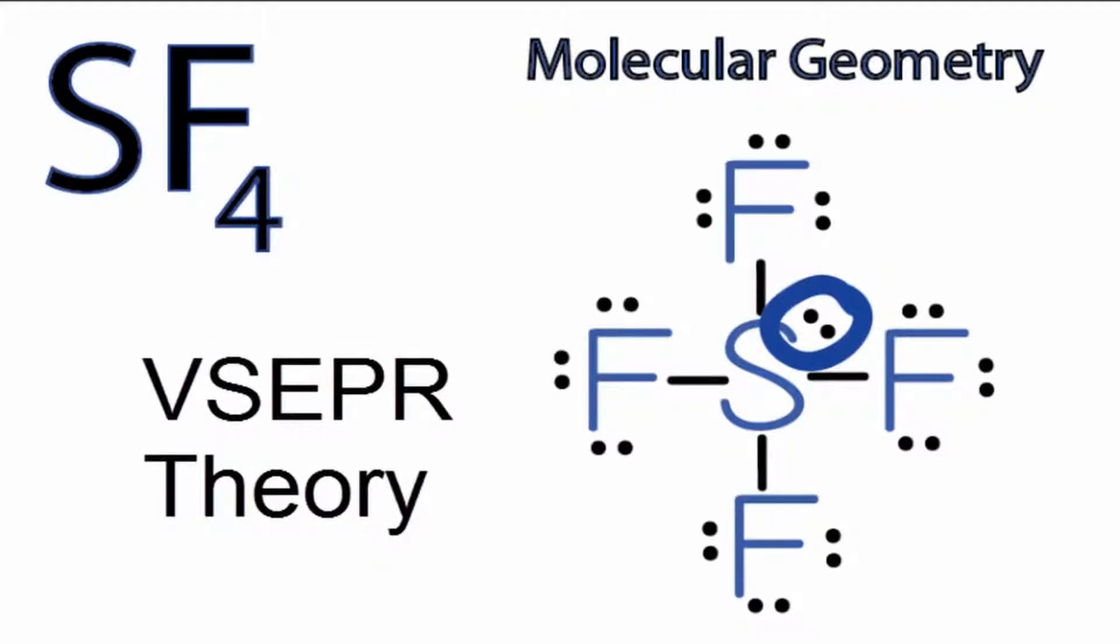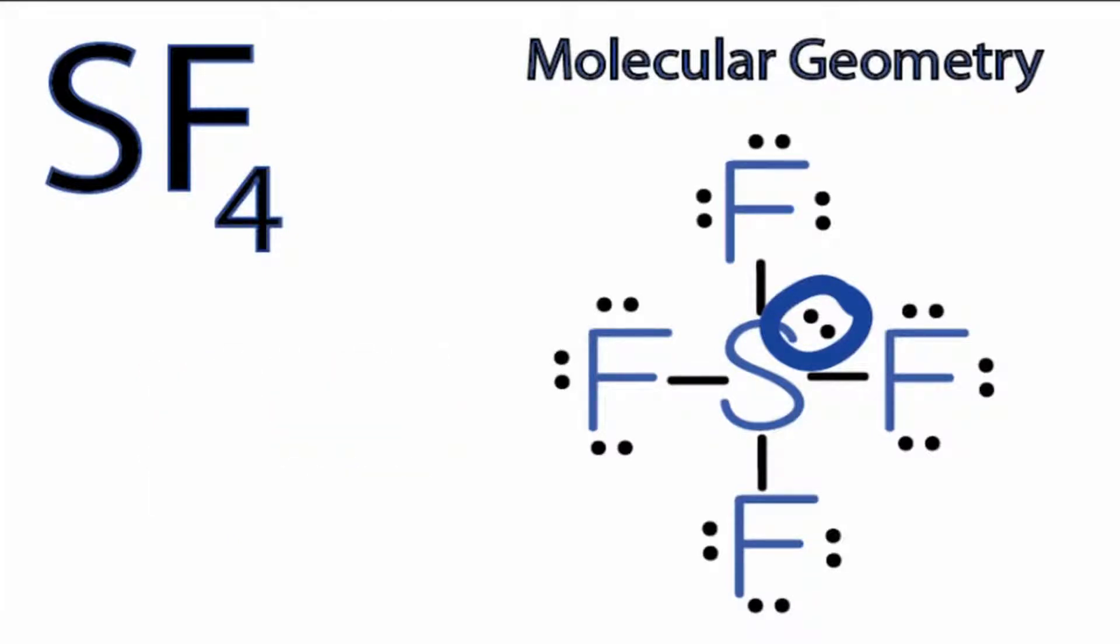According to valence shell electron pair repulsion theory, the atoms and the lone pairs of electrons are all going to push apart from each other, and that's going to give SF4 its molecular geometry. That's going to look like this.